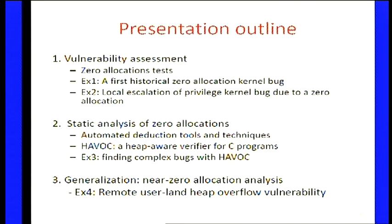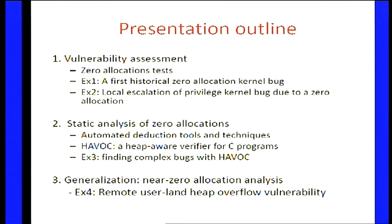A little outline of the presentation. First, I'll run a couple of tests so you can see the actual result of zero-size heap allocations on kernel functions of the Windows kernel. Then I'll introduce three different techniques for detection — all static analysis, done without execution, at build time via a compiler plugin — to detect all instances of potential zero allocations and where memory corruption can happen.